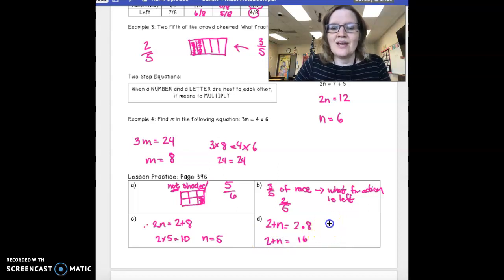Now, I can say n, excuse me, little pen, n equals 16 minus 2. Because I'm adding on one side, I'm going to subtract on another.